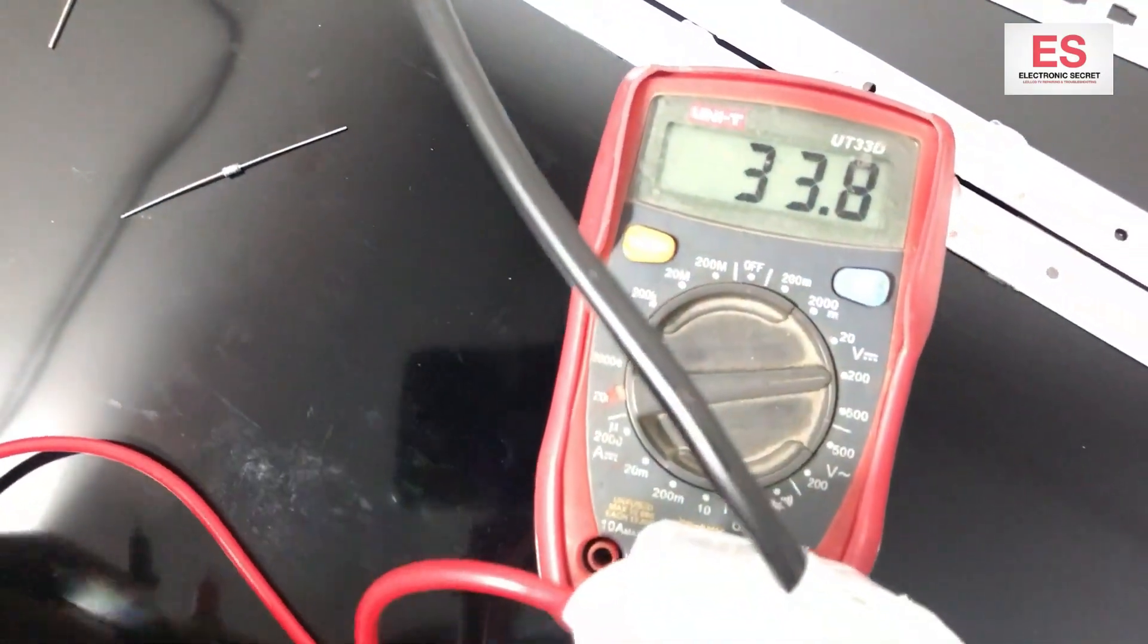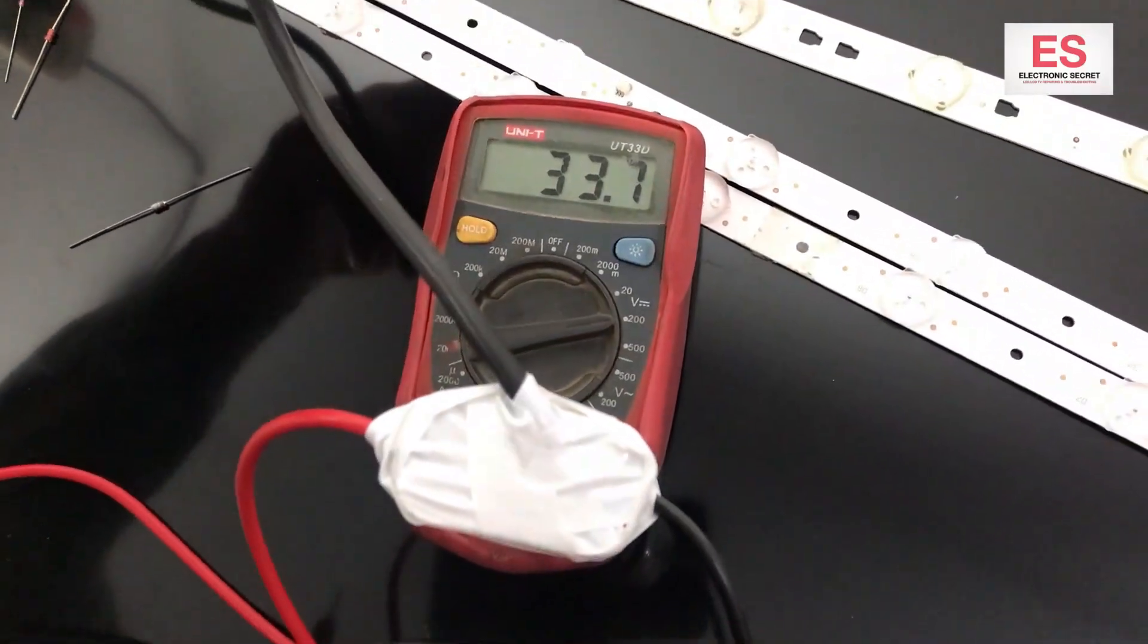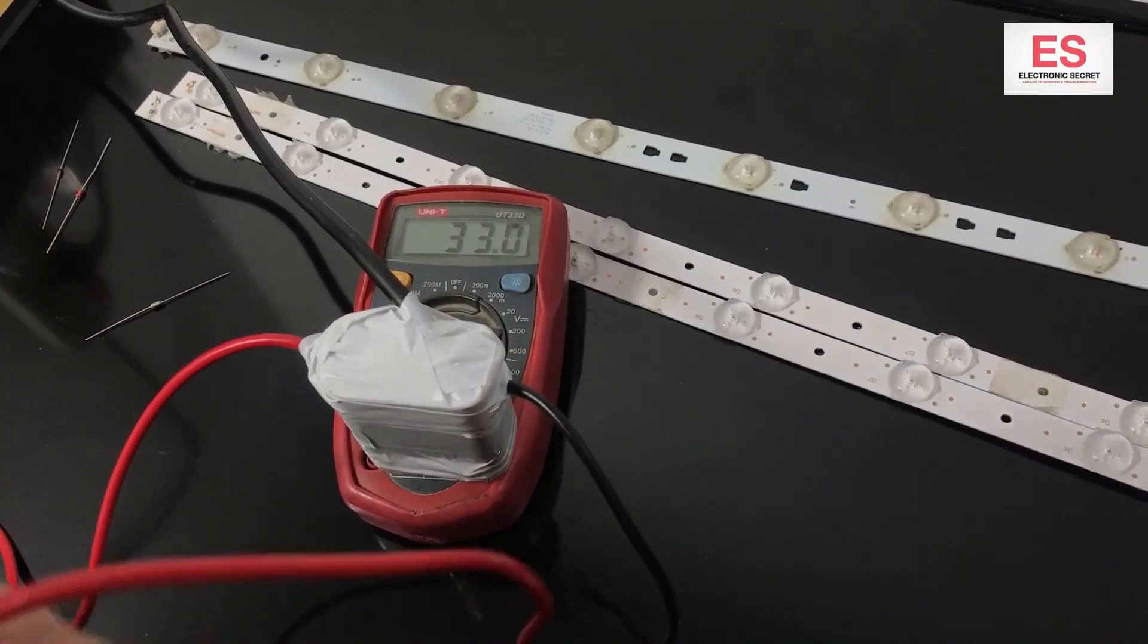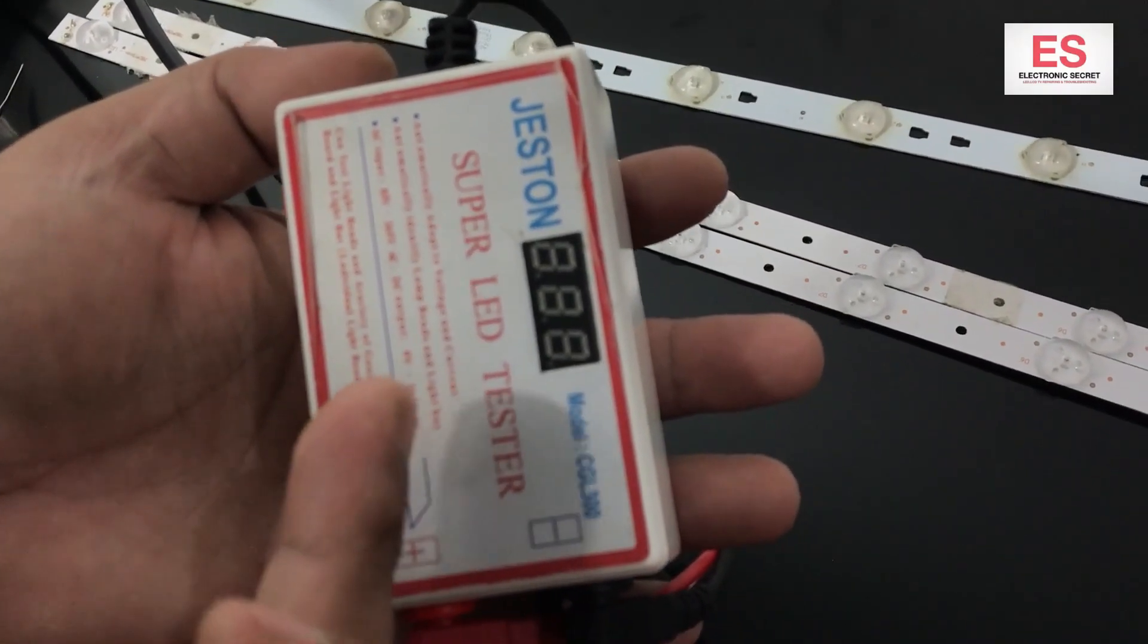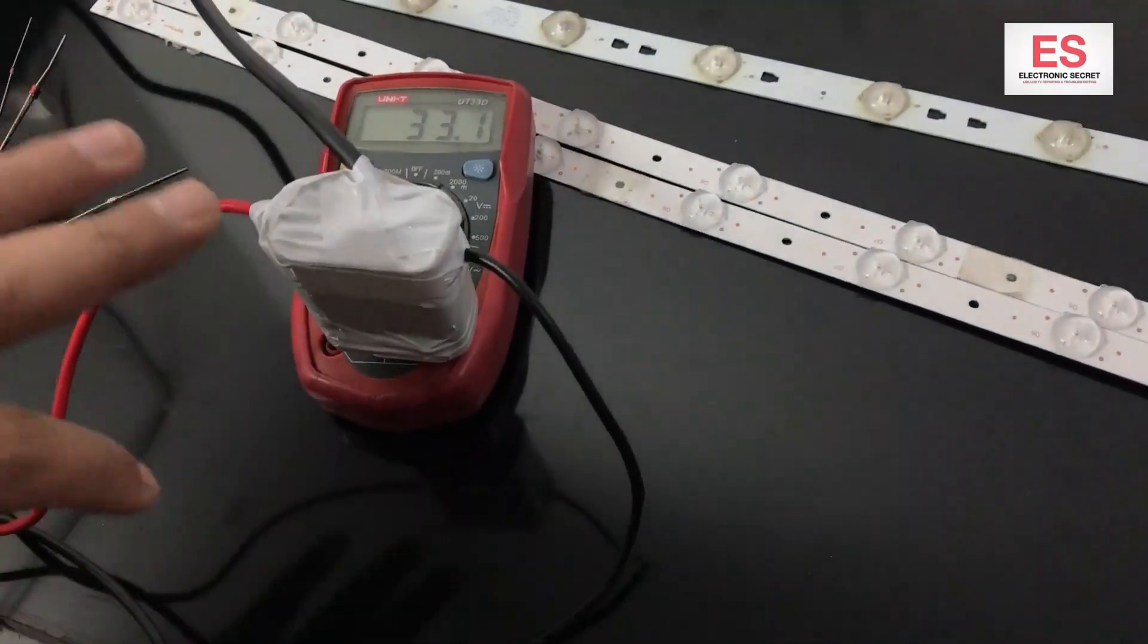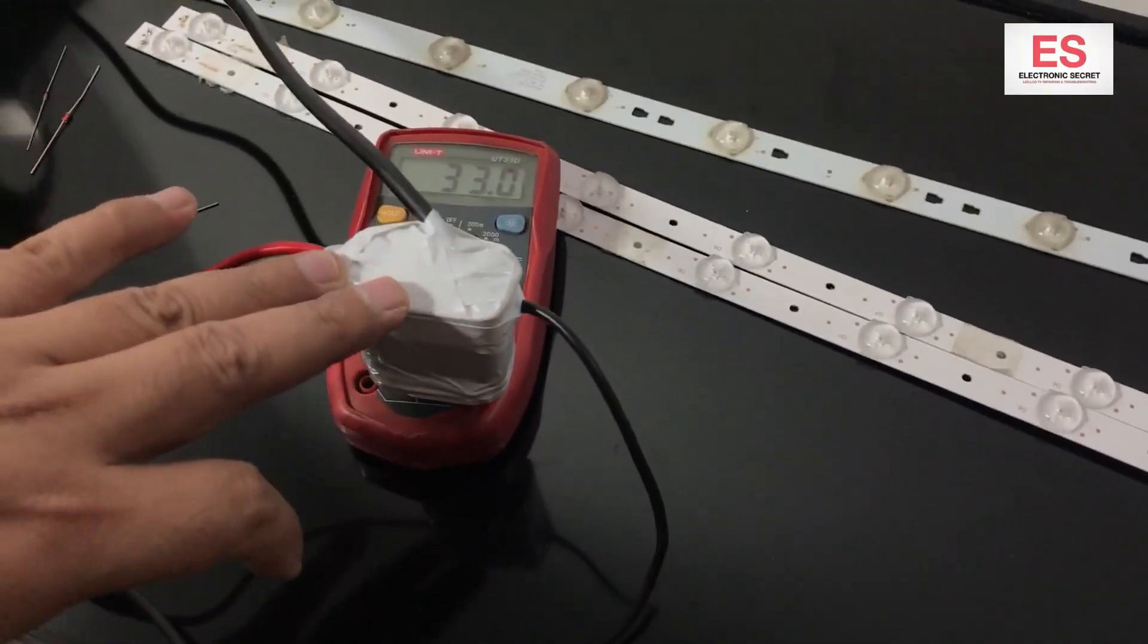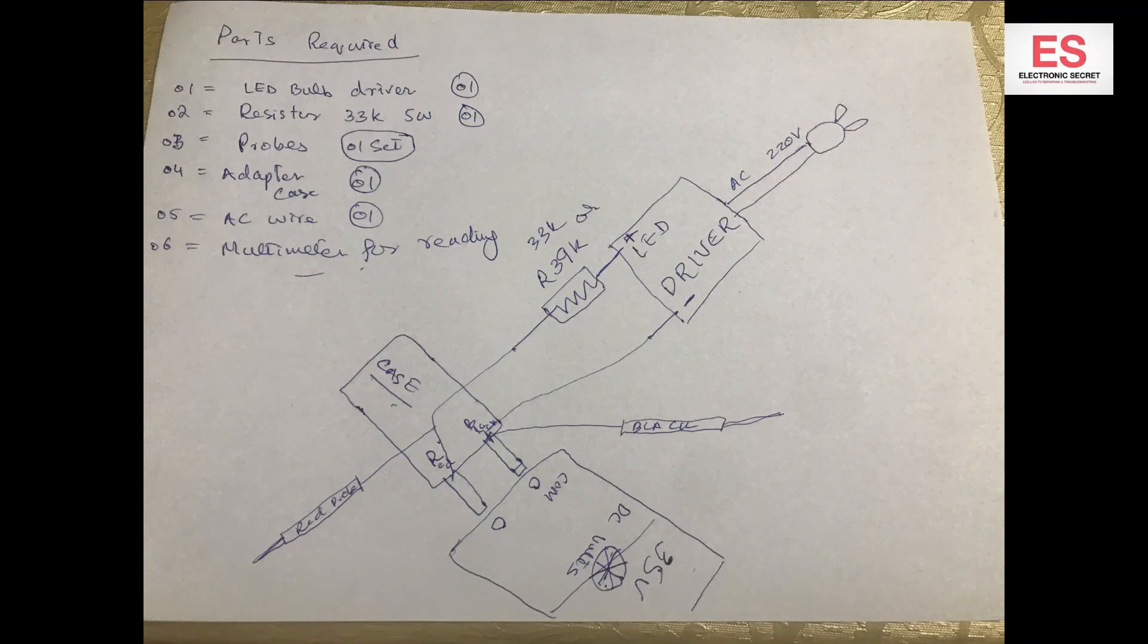So I have explained all the methods of checking backlight strip, bulb strips, and you can easily make it instead of buying the original backlight tester. This is the diagram of the backlight tester. Hope you have enjoyed it. Kindly share it with your friends and subscribe my channel. Thank you friend.